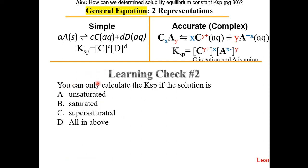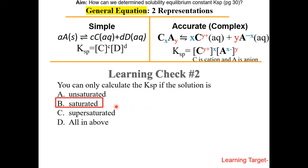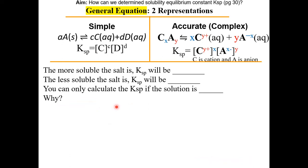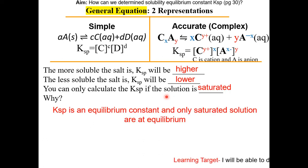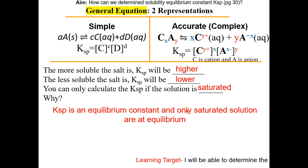Learning check number two: you can only calculate Ksp if the solution is what? The answer is choice B — saturated. This is because a saturated solution is in equilibrium. The more soluble the salt is, Ksp will be higher. The less soluble the salt is, Ksp will be lower. You can only calculate Ksp if the solution is saturated, because Ksp is an equilibrium constant and only saturated solutions are at equilibrium.